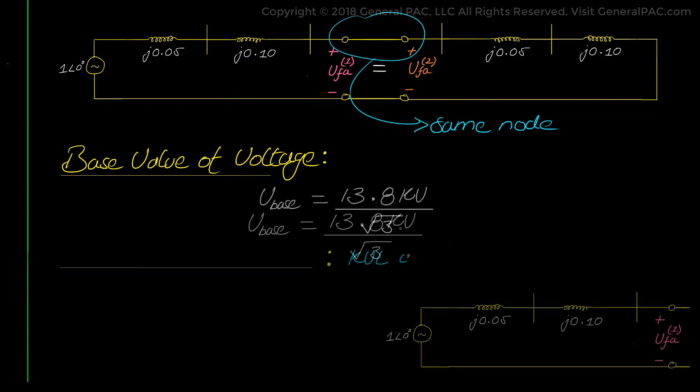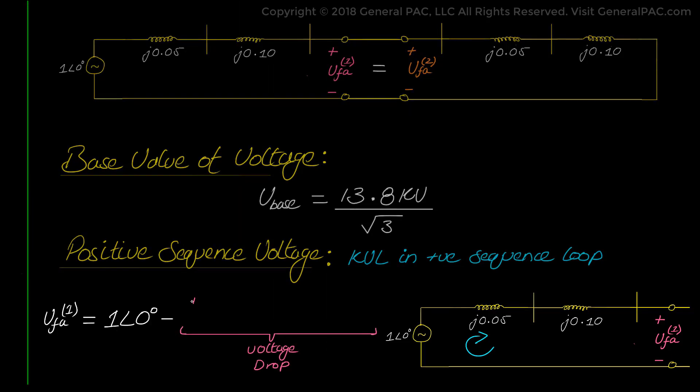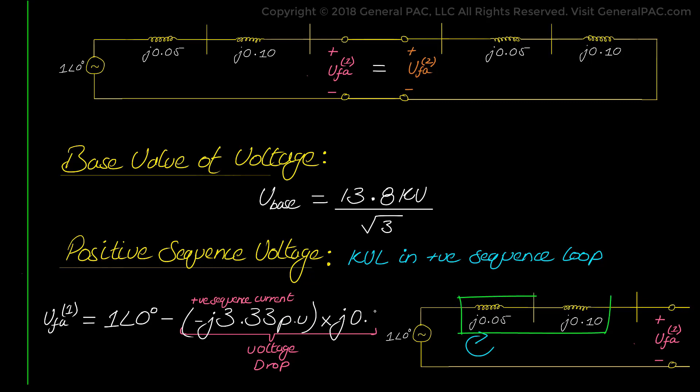And now applying KVL in the positive sequence loop, the positive sequence voltage at the point of the fault is the source voltage 1 per unit angle 0 degrees, minus the voltage drop across the positive sequence impedance, which is positive sequence fault current negative J3.333 per unit, multiplied by J0.15 per unit. It gives us the value of 0.5 per unit angle 0 degrees.